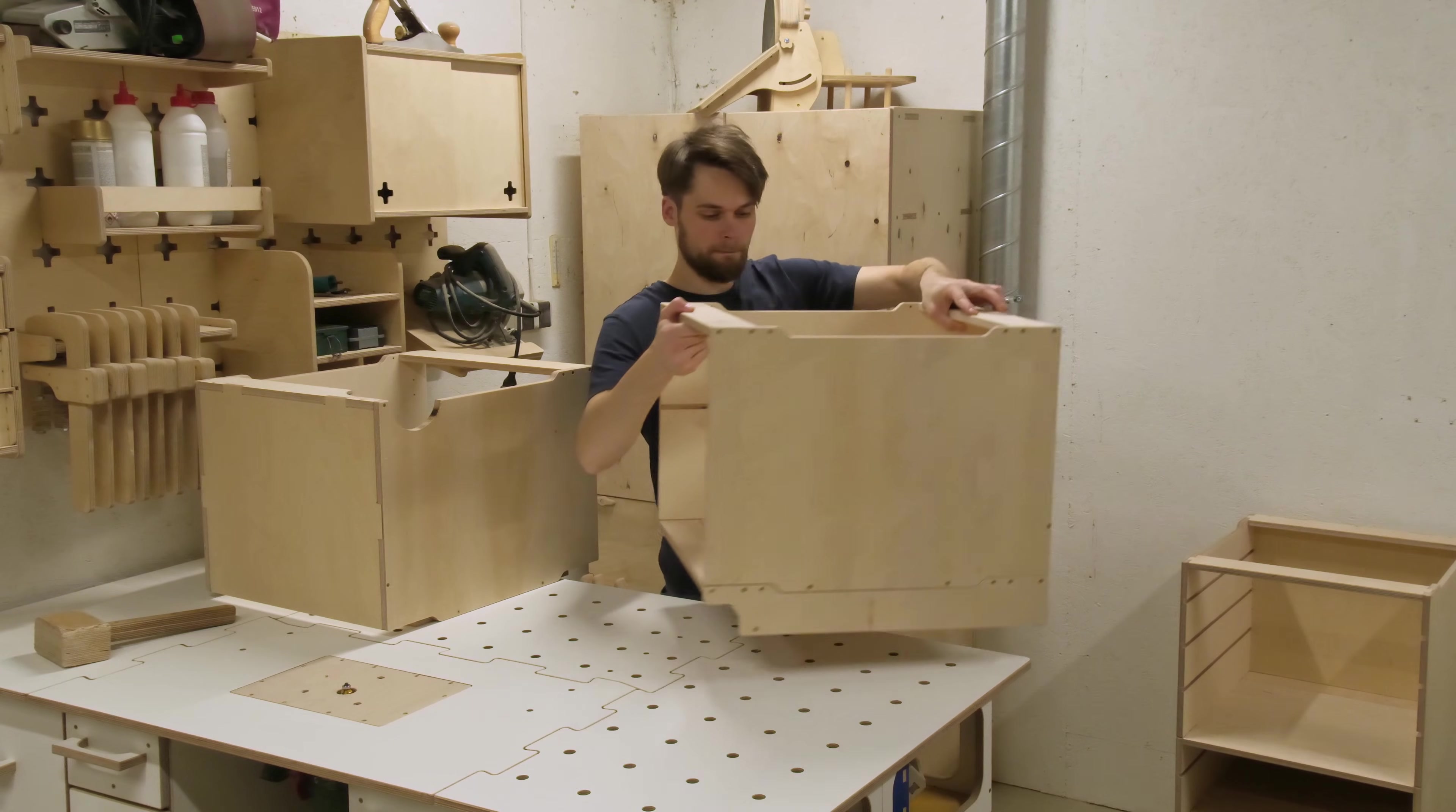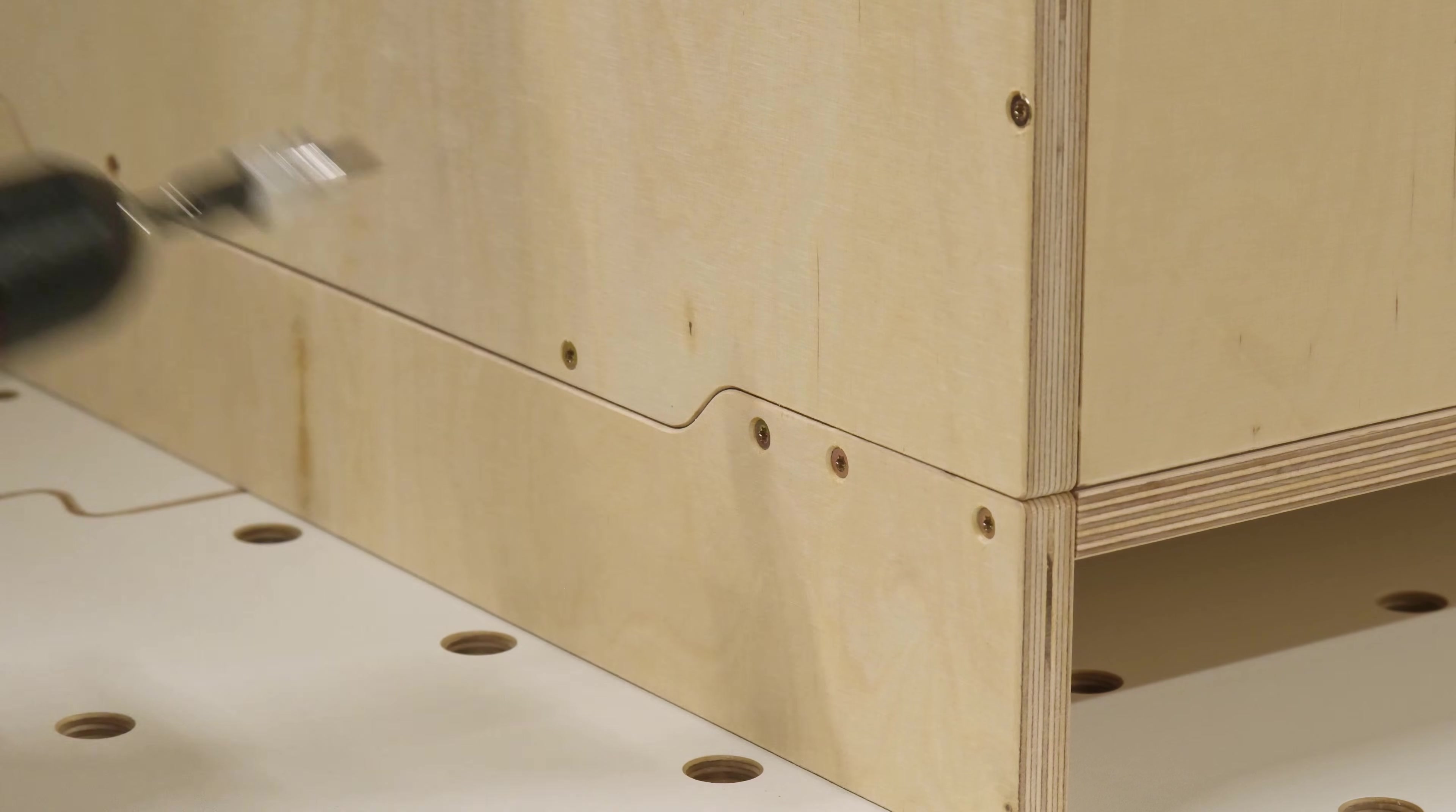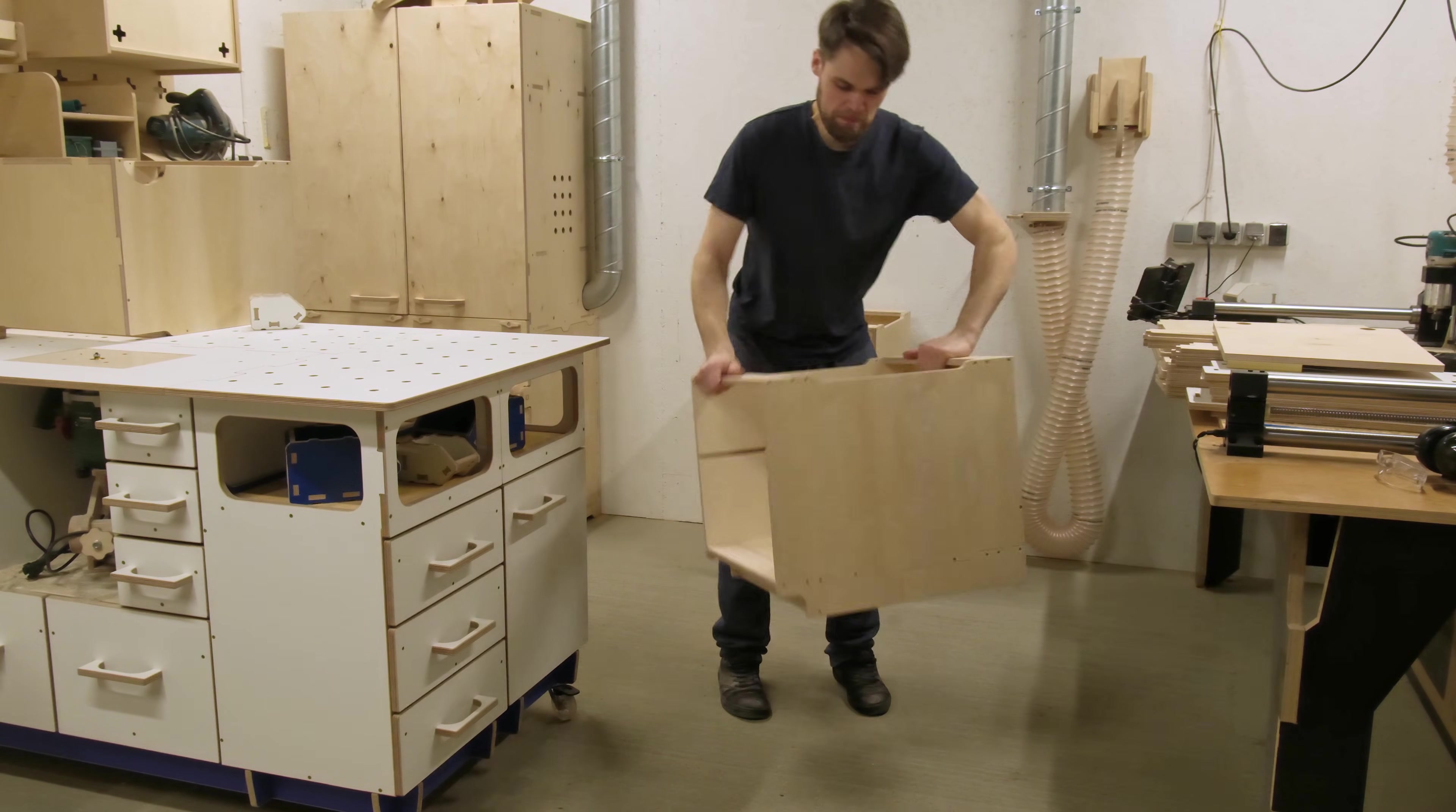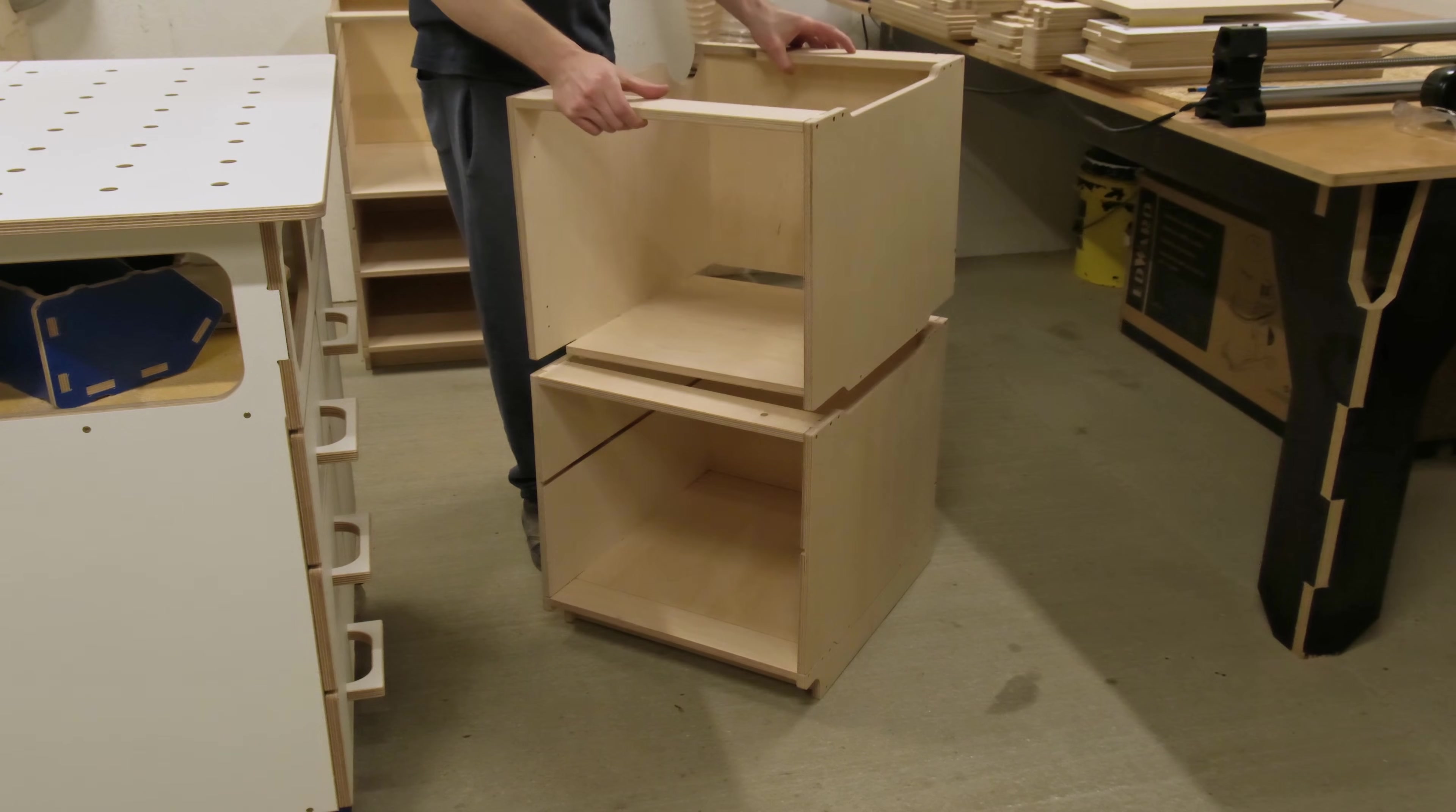Now we can secure the modules together. This is super simple. Since the lower module walls overlap with the upper module floor component, we can simply add a screw at each corner and everything forms one rigid assembly.